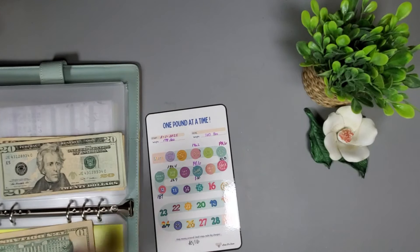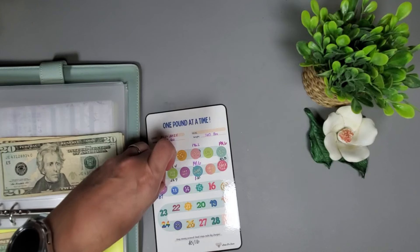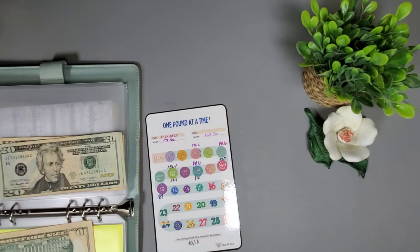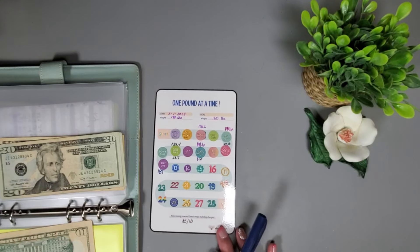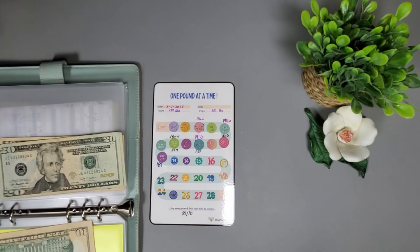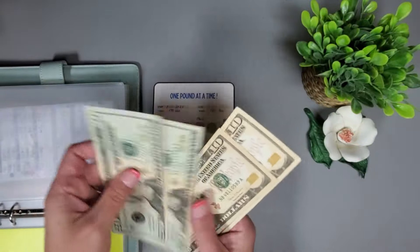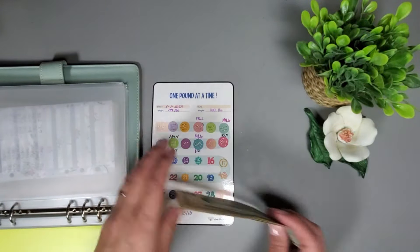For those of you that may not know I do take Zep Bound which is a weekly injection and I am on the five milligram right now. It's similar to Mounjaro but they use Zep Bound specifically for weight loss. We are adding the ten dollars in, we have 20, 40, 50, 60 going in here.